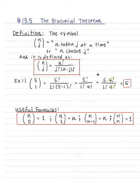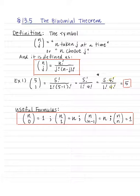Here are some useful formulas. You can easily derive these, so you don't need to memorize them. n choose 0 is 1, n choose 1 is n, n choose n minus 1 is n, and n choose n is 1. All you have to do is apply the definition.